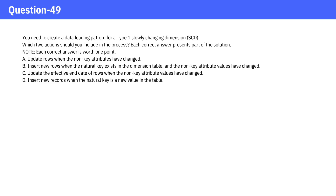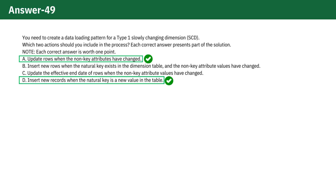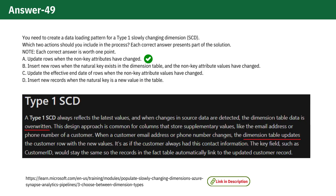The correct answers are options A and D. Option A — update rows when the non-key attributes have changed — is correct because this is the core mechanism of a Type 1 SCD. The objective is to update existing records with new data when there are changes in non-key attributes, overwriting the old data. This process ensures the dimension table always reflects the most current state of data without retaining historical versions.